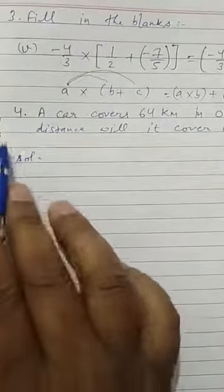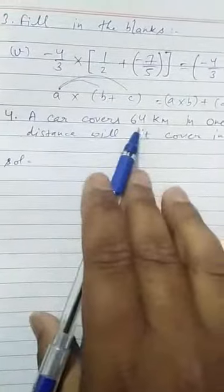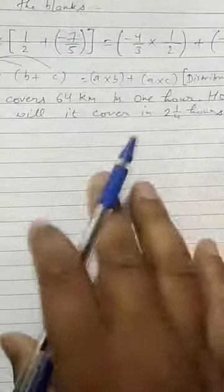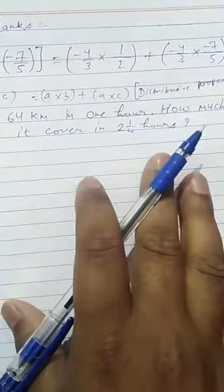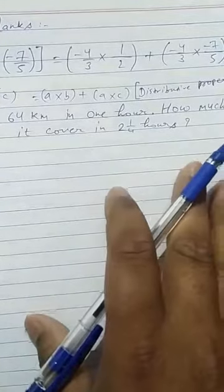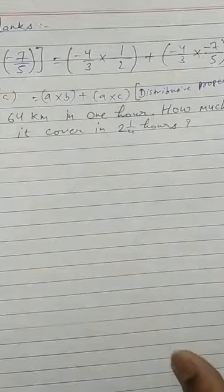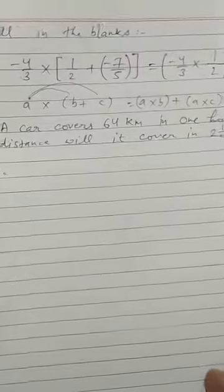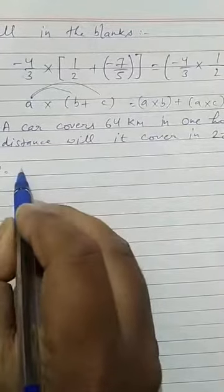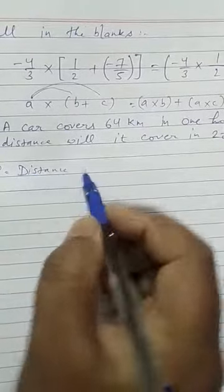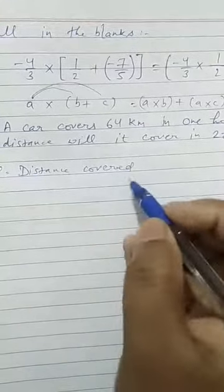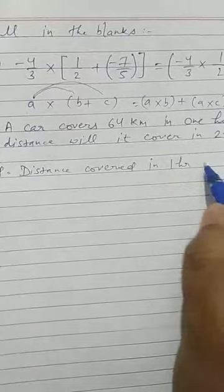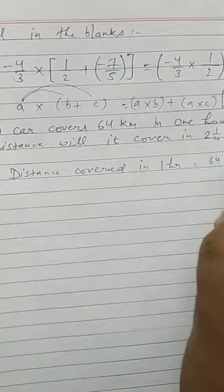Today's last question. Number 4. A car covers 64 km in 1 hour. How much distance will it cover in 2 and 1 upon 4 hours. So when the time is increased, then the distance covered will also increase. So this is the case of multiplication. So we will write this statement. Distance covered in 1 hour is equal to 64 km.